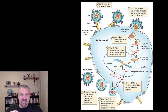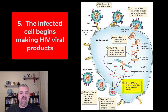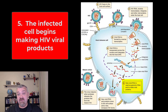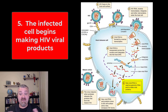Step five: this cell is now a factory making HIV viruses. New viral RNA is used as genomic RNA and to make more viral proteins. This is where one of the classes of drugs — protease inhibitors — comes in. Can we stop these newly produced proteins from becoming functional? That's one of the many drugs in the cocktail being used to help people with HIV.